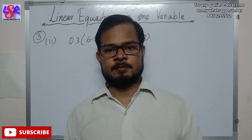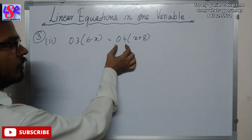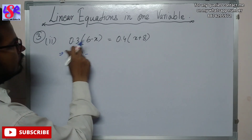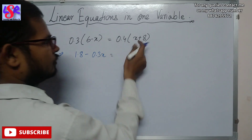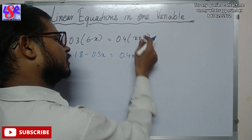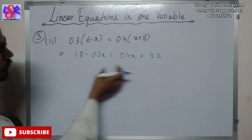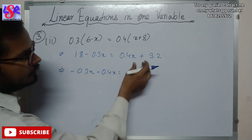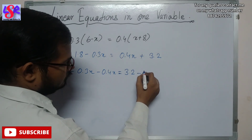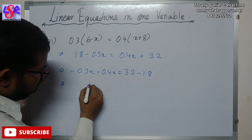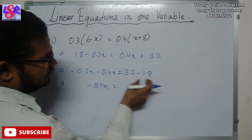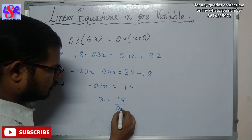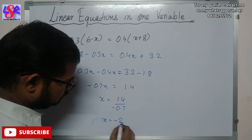Now let's do question number 3, second part: 0.3 into 6 minus x equals to 0.4 into x plus 8. Opening brackets: 1.8 minus 0.3x equals to 0.4x plus 3.2. Rearranging: minus 0.3x minus 0.4x equals to 3.2 minus 1.8, so minus 0.7x equals to 1.4. Therefore x equals to 1.4 upon 0.7 with minus sign, giving x equals to minus 2 as answer.